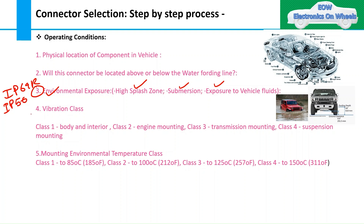The fourth factor is vibration class. Vibration classes range from 5G to 10G, and are categorized by location: Class 1 is body and interior, Class 2 is engine mounting, Class 3 is transmission, and Class 4 is suspension mounting — which experiences the highest vibrations. You must check the vibration class of the connector's intended location before making your selection.